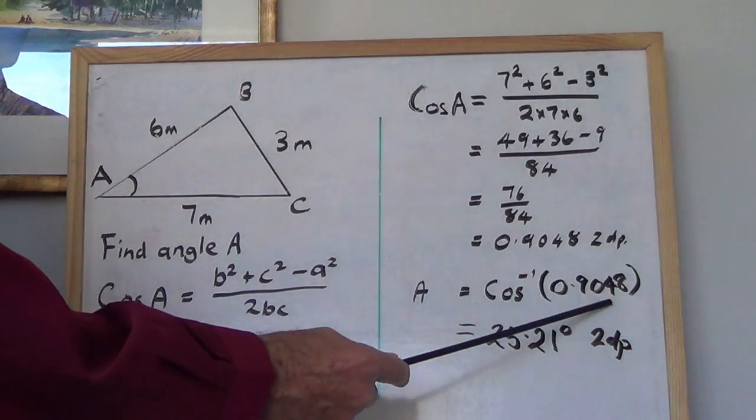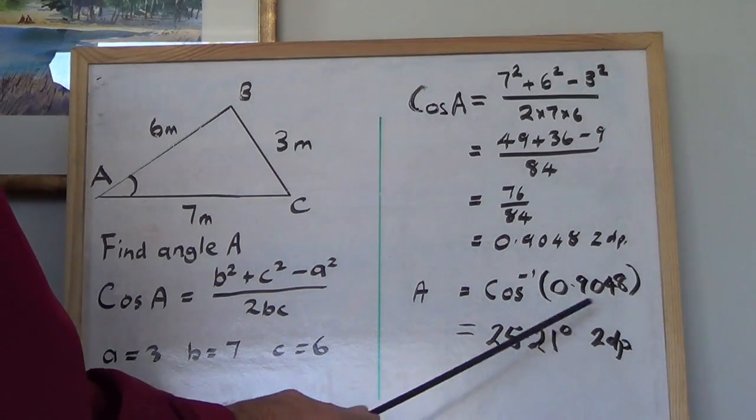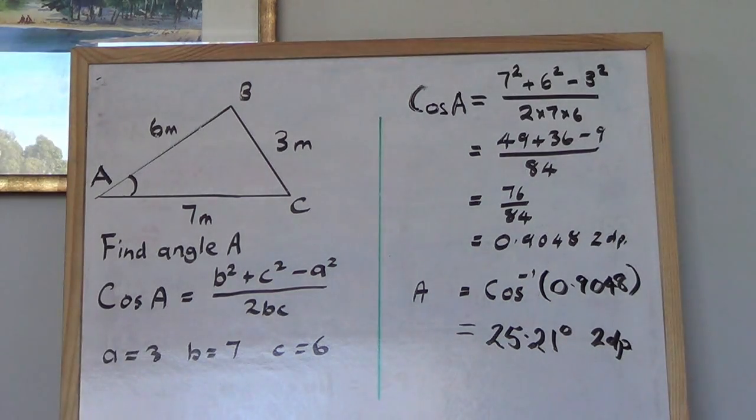Right, the inverse cos of the answer. And that answer is 25.21 degrees to 2 decimal places. And we're done.